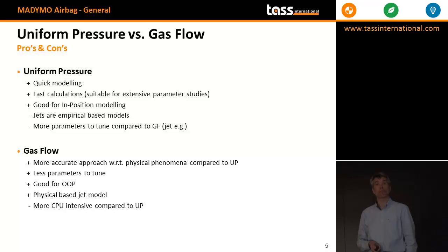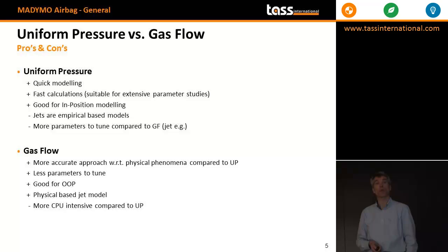Let's describe the pros and cons of uniform pressure versus gas flow. Uniform pressure can be set up pretty quickly because you can make use of a scaled airbag. What happens before the deployment is less relevant, so those models are extremely useful for DOE, with run times of less than a quarter of an hour. But they are only good for in-position load cases. Jets are empirical-based models — you don't even need to define a jet, but if you would like to steer the deployment in a certain direction you can make use of jets. Be reminded that those jets have to be inside the airbag in order to be effective.